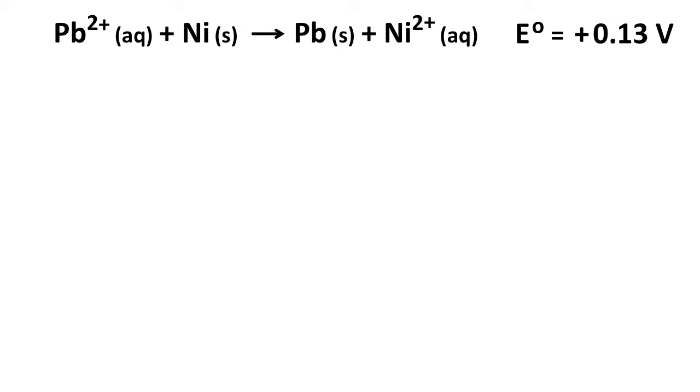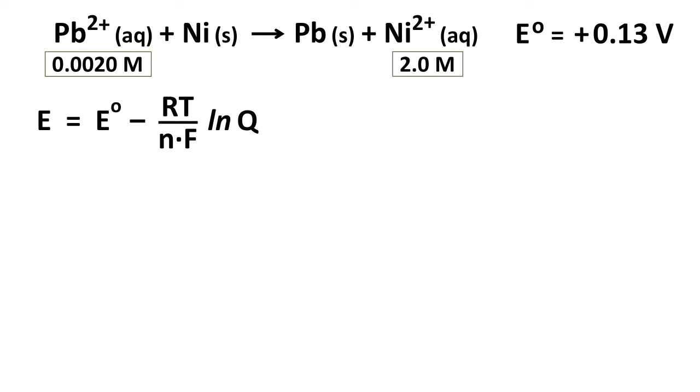Now that we know the cell potential at standard conditions, we take into account that we're at non-standard conditions, the lead two plus is 0.002 molar, the nickel two plus is 2.0 molar. And the Nernst equation in all its glory is E = E° - RT over nF times ln Q, with Q being equal to the usual reaction quotient products over reactants. Notice Pb solid and Ni solid are not included in the reaction quotient because they're solids. So Q equals Ni²⁺ concentration over Pb²⁺ concentration.